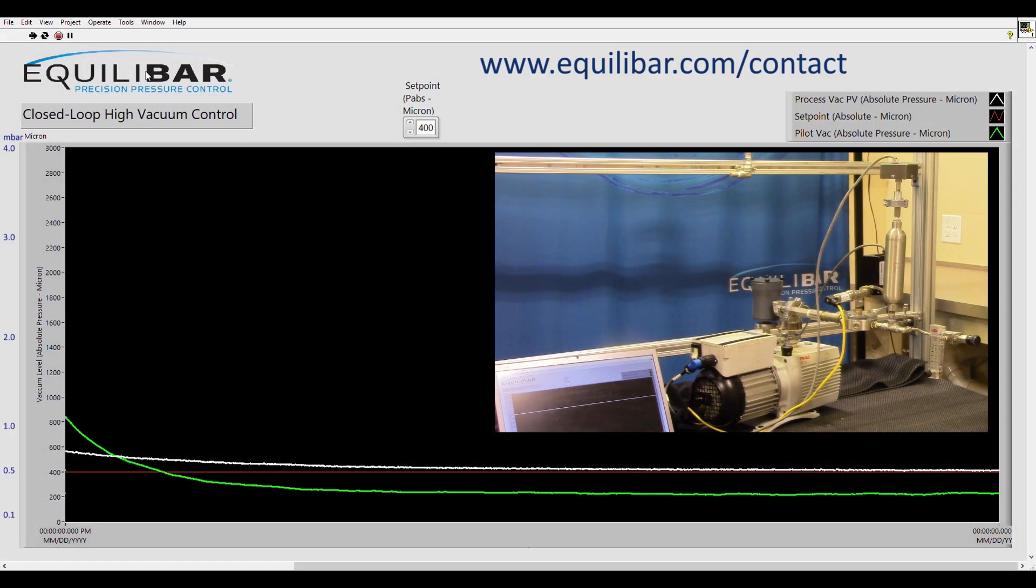Now we've started the pump. We are monitoring and controlling the vacuum process using LabVIEW with a simple PID loop. The controller watches the process pressure sensor and adjusts the pilot pressure command as necessary to achieve the desired set point.